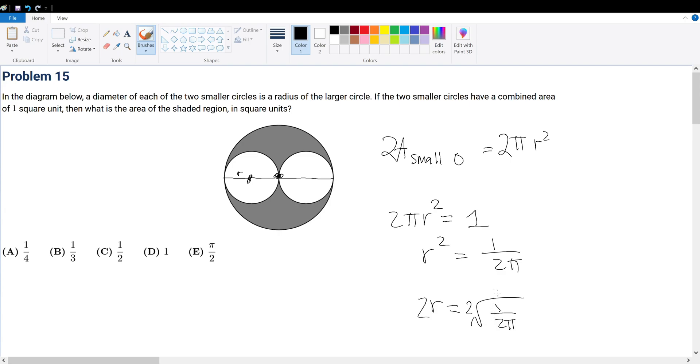Now, what is the area of the shaded region? Well, the area of the shaded region is equal to the area of the large circle minus two times the area of the small circle.